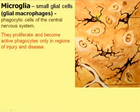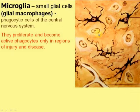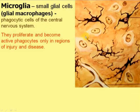Microglia are small glial cells with short branching processes. Usually they are not active, but they are activated after brain injury when nerve and glial cells die and it is necessary to remove and eliminate the debris. Microglia become much bigger and round in shape, and convert to macrophages which phagocytose the dead nerve and glial cells.